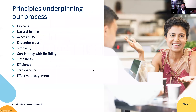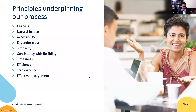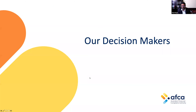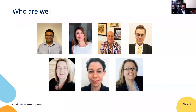The principles underpinning the process: fairness is the key one. We are required to satisfy the rules of natural justice — which really means you understand the case against you and have an adequate chance to respond. We try to engender trust. Simplicity is the aim — not to complicate things with lots of case law, but to have a common sense view. Timeliness, transparency — which is part of why we're here today — and effective engagement are all principles we aim for.